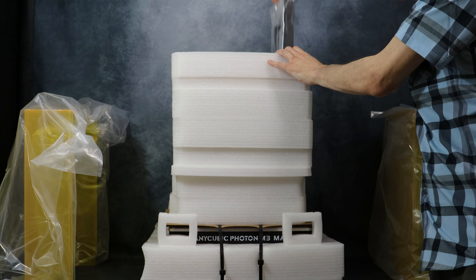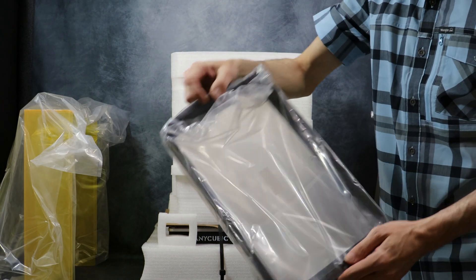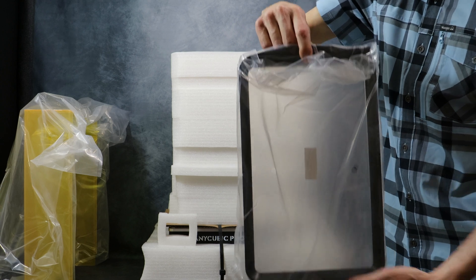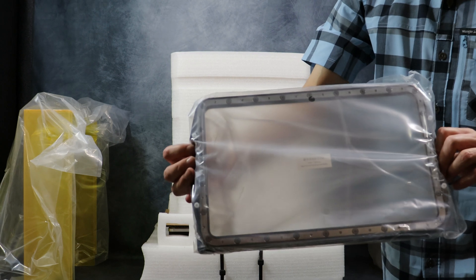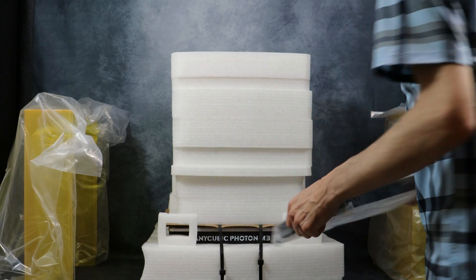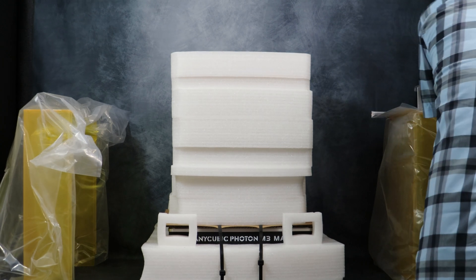The next thing we're going to remove is the resin vat. This thing is massive as well. To the fill line it takes approximately 500ml of resin. And then you can easily have another 500ml added, adding up to a kilogram with the autofill once you start your printing.